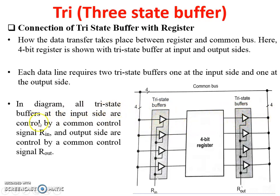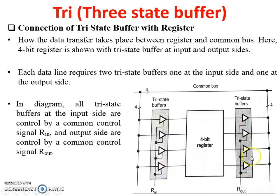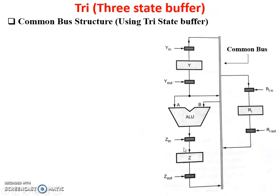In the diagram, all tri-state buffers at the input side are controlled by a common control signal RIN. You can see over here, this is RIN — it is the control signal that controls simultaneously all input tri-state buffers. And this is ROUT — it controls simultaneously all output tri-state buffers connected to the common bus.